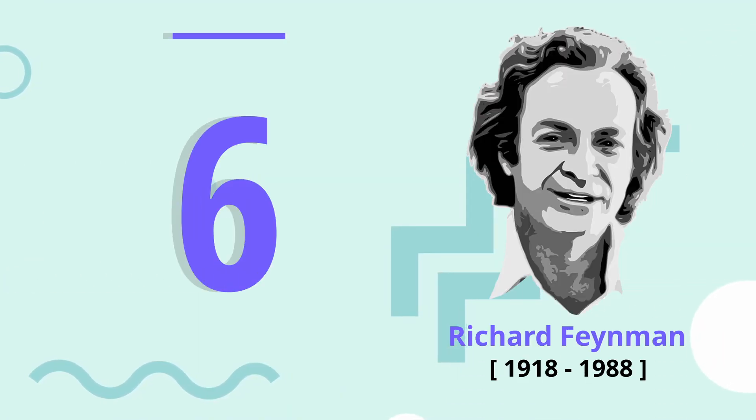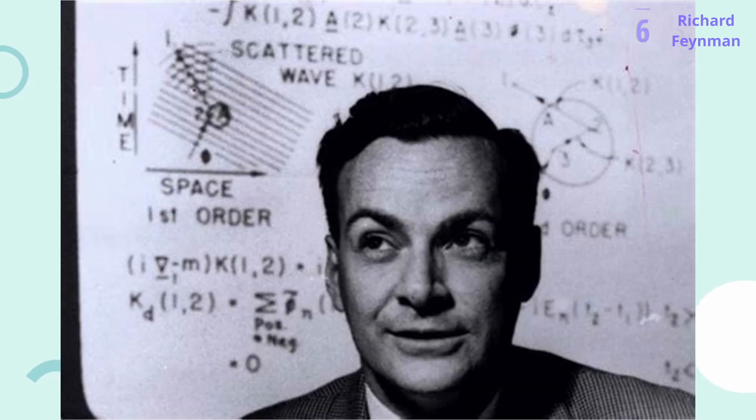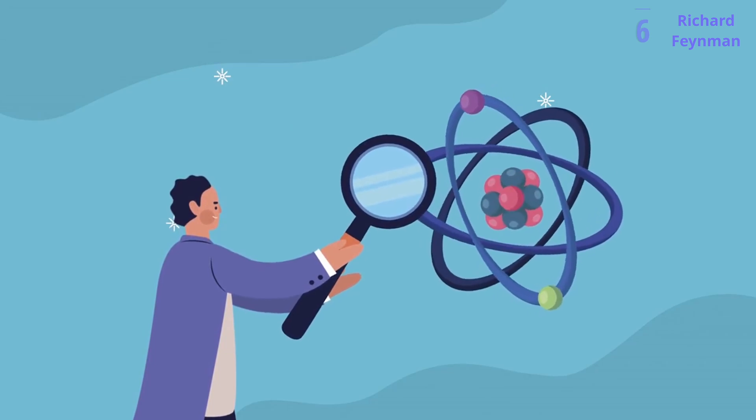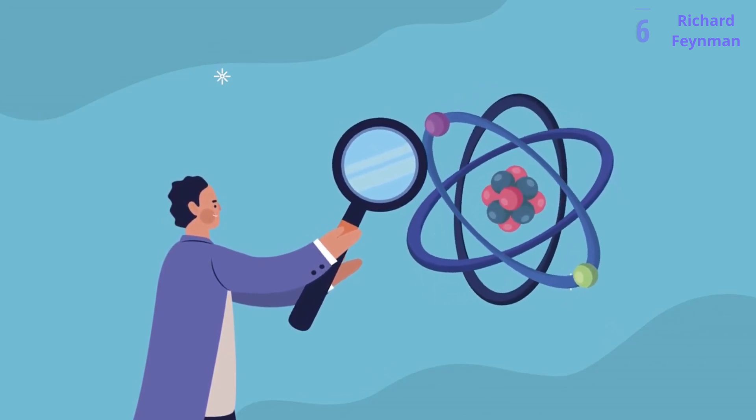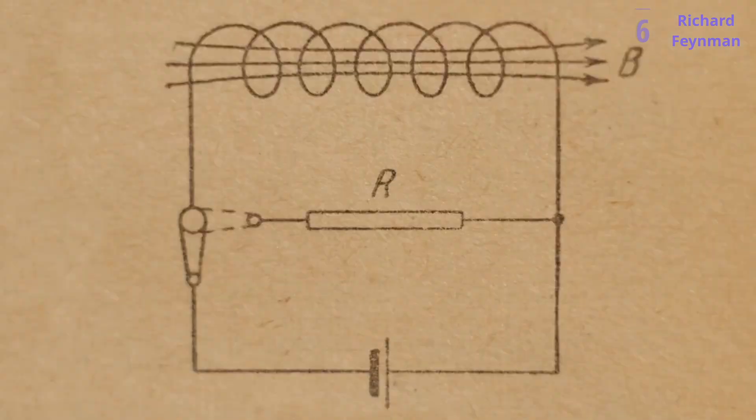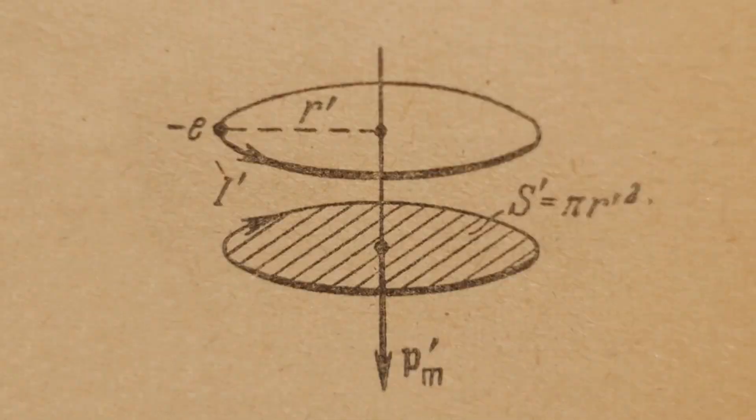At number 6, we have Richard Feynman. Imagine a super smart scientist who explains difficult ideas with jokes and stories. That was Richard Feynman. He was a Nobel Prize winner who could take complicated physics concepts and break them down for anyone to understand. He even had a way of explaining the strange world of atoms using just a glass of water. His funny personality and brilliant mind made him a legend. Even today, Feynman's lectures continue to inspire both scientists and regular people to explore the wonders of the universe.